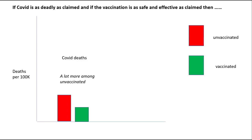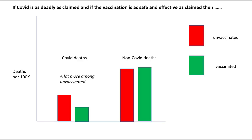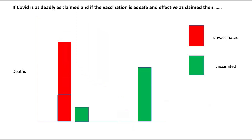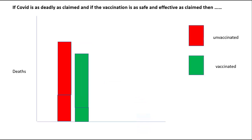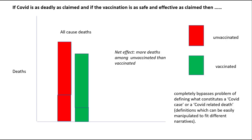On the other hand, if the vaccine is as safe as claimed, then for non-COVID deaths there should be only a few more, through adverse reactions, in the vaccinated compared to the unvaccinated. So when we add the unvaccinated COVID deaths and non-COVID deaths together, and the vaccinated non-COVID and COVID deaths together, we get the totals of all-cause deaths in each. We expect the net effect to be more deaths amongst the unvaccinated than the vaccinated. By focusing only on all-cause deaths, we completely bypass the problem of defining what constitutes a COVID case or a COVID-related death.